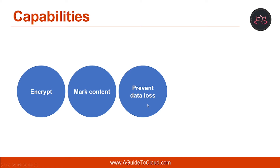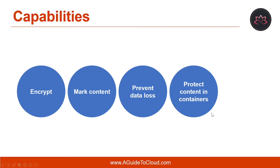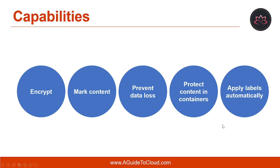Another capability is preventing data loss by turning on endpoint protection in Intune. If sensitive content gets downloaded, you can help prevent the loss of data from Windows devices — for example, you can't copy labeled content into Dropbox, Gmail, or a USB drive. Before your sensitivity labels can use Windows Information Protection, you first need to create an app protection policy in the Azure portal. The next capability is protecting content in containers such as sites and groups, when you opt into the preview to use sensitivity labels with Microsoft Teams, Office 365 groups, and SharePoint sites. The last capability is to apply labels automatically in Office apps or recommend a label. You can choose what type of sensitive information you want labeled, and the label can either be applied automatically or you can prompt users to apply the label that you recommend.